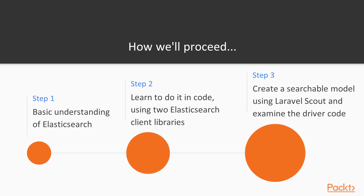By the end of this course, you should have an understanding of Elasticsearch — the terms, the basic functionality, how it works, what queries look like, what responses look like, and how you talk to the API. You should be able to write queries using the Elasticsearch query DSL, use two different Elasticsearch PHP clients to write and extend Elasticsearch integrations in any PHP web application, and know how to use Laravel Scout to integrate Elasticsearch and create searchable models in a Laravel web application. Our next video is the first video of the course — the first video of our dev environment setup section — where we'll get started setting up our dev environment.